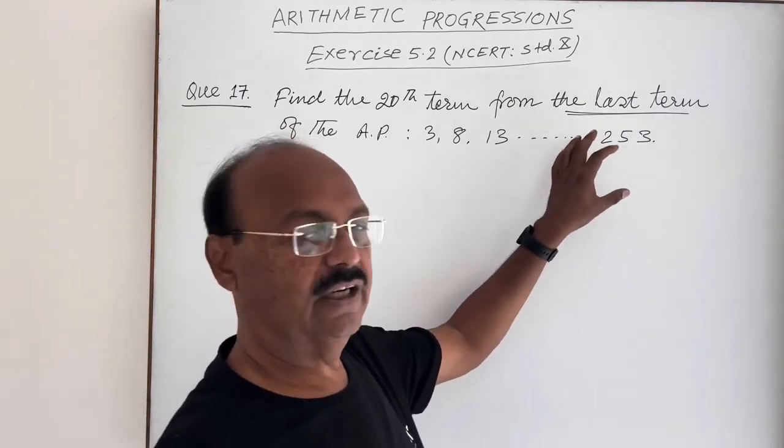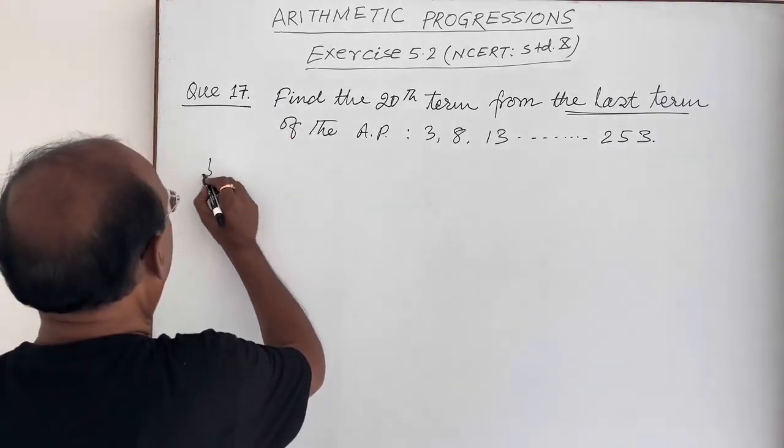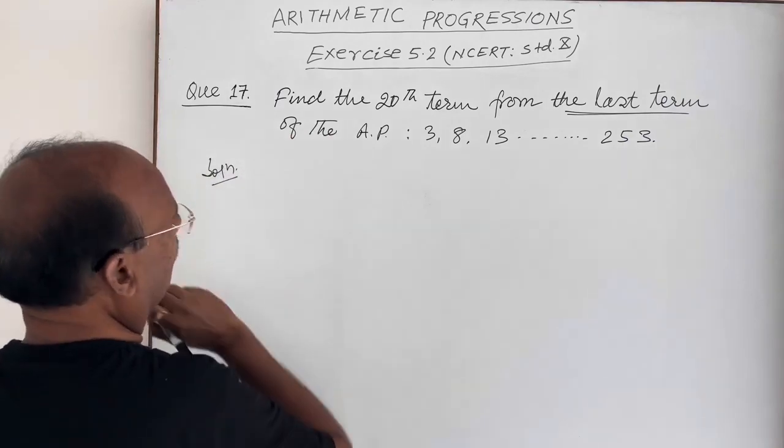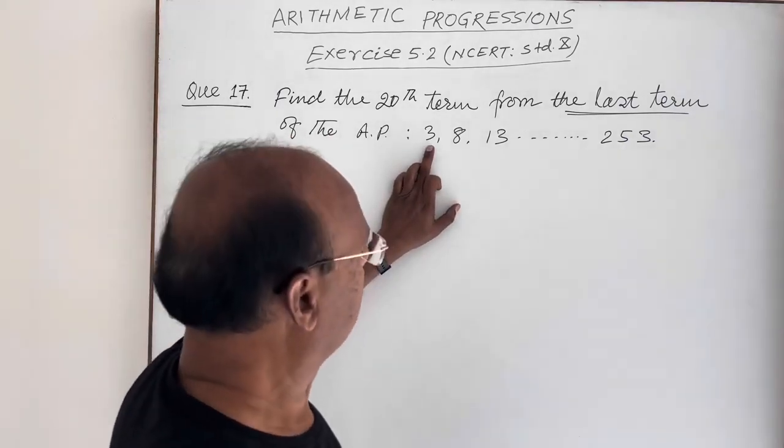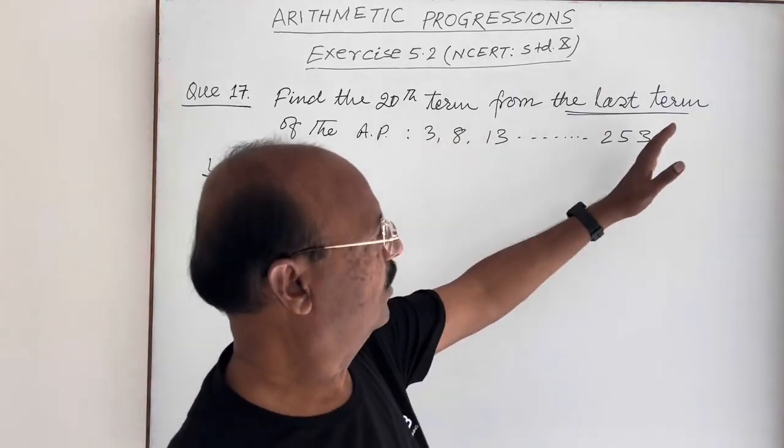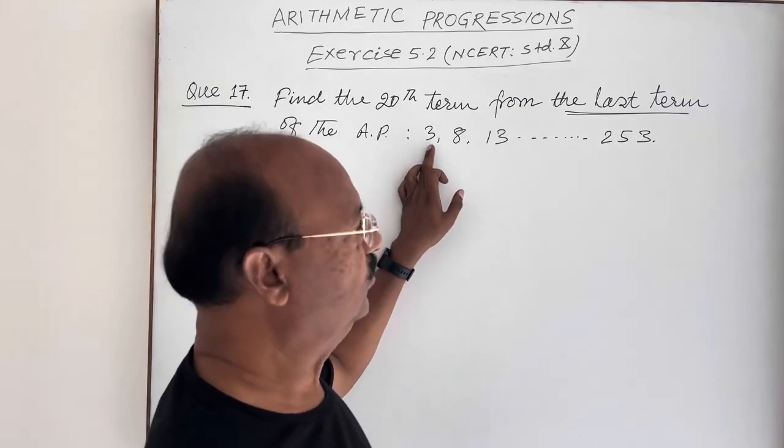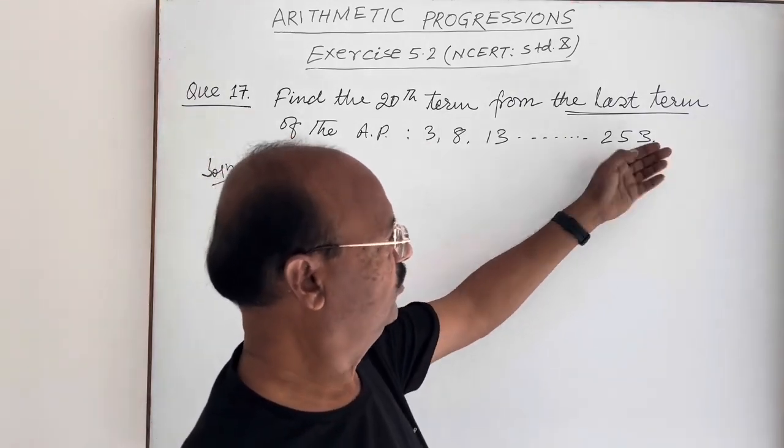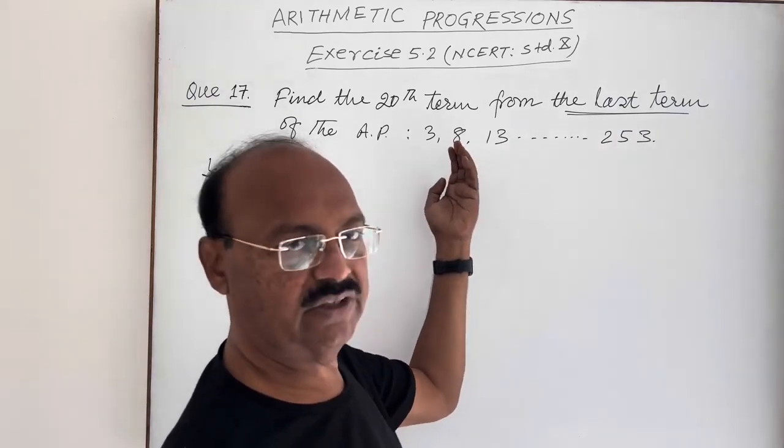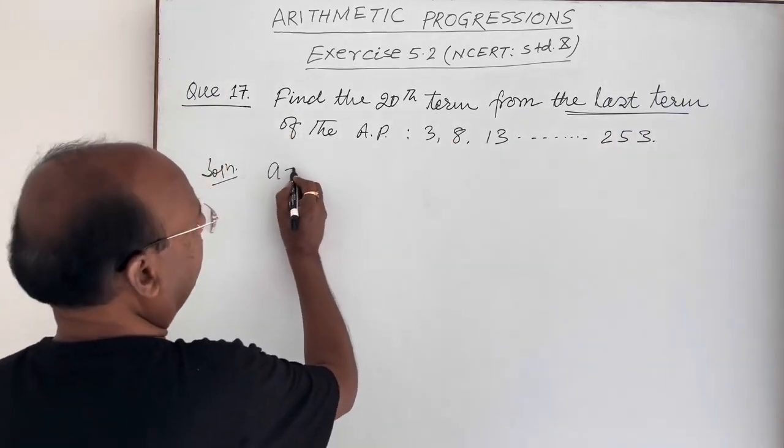Here first term is 3, but if you look at it from the last term, then in place of taking 3 as first term we can take 253 as first term and we will come backwards. So let us write A is equal to 253.